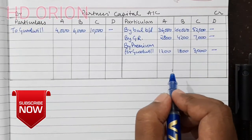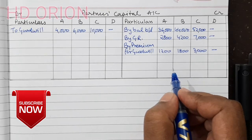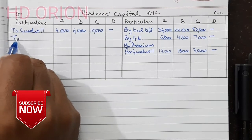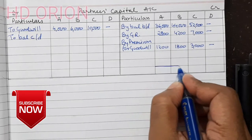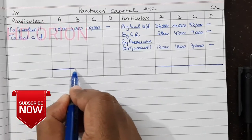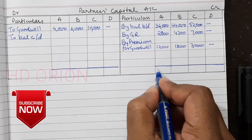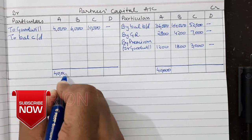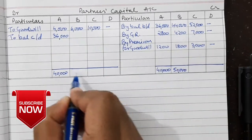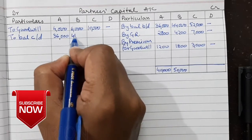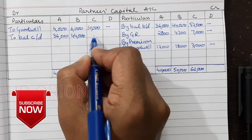The old ratio will be the sacrificing ratio. New partner D will bring sufficient capital for a two-fifths share, so we close the accounts. The balancing figures are: A — grand total ₹40,000, closing balance ₹36,000; B — grand total ₹50,000, closing balance ₹44,000; C — closing balance ₹52,000, grand total ₹62,000.